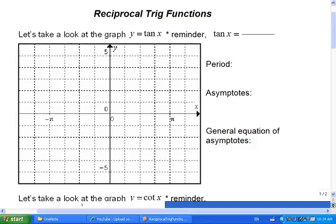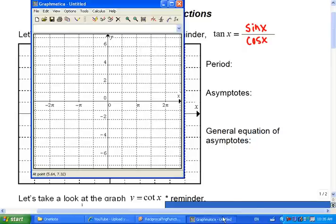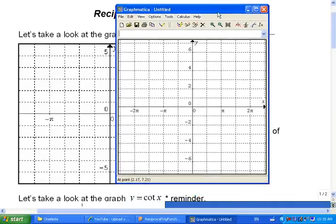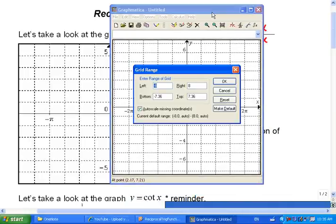So for example with the tangent graph, one thing to remember here that'll help us figure out some of the things about this is that tangent is sine x over cosine x. If we wanted to take a look at the graph, I actually have some software here to help us out. We'll transfer it in a minute.